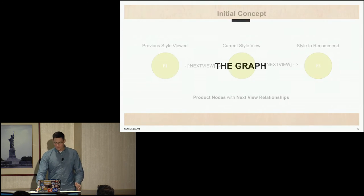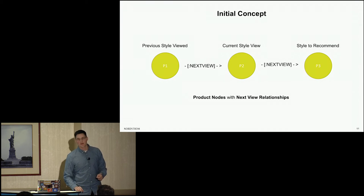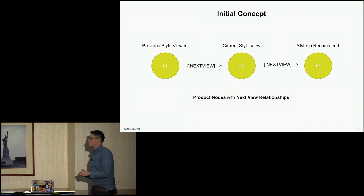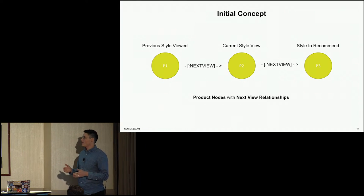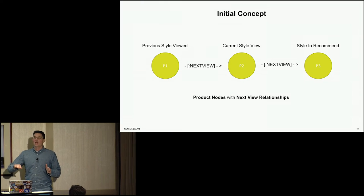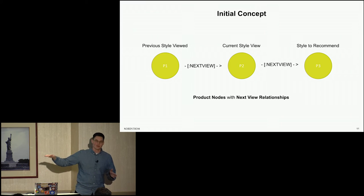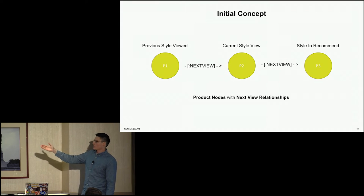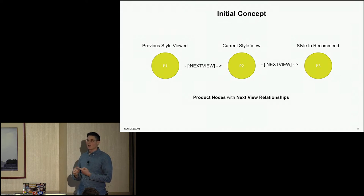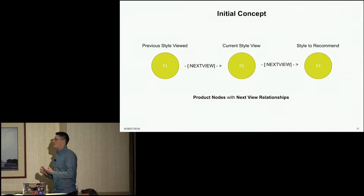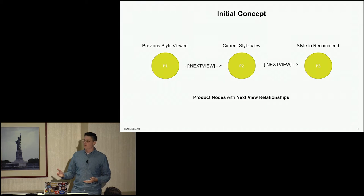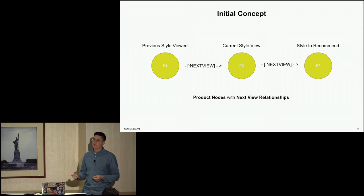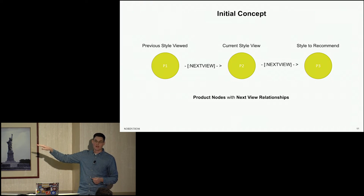Let's get into the graph. We had a very simple initial concept that would take into consideration just two steps of the customer journey — the current style being viewed and the most recent style viewed before that from our live event stream — then find all the paths of shoppers who have done that before and moved on to another item, and suggest the top item based on the number of paths observed. We just have one type of node representing our products with their specific styles, and next view relationships between them, which document a sequential move from one product to another done by a shopper. We needed to make sure those two next view relationships in a given scenario are done by the same shopper.